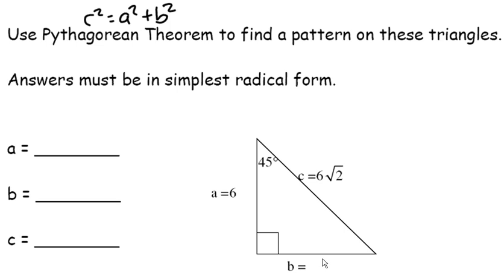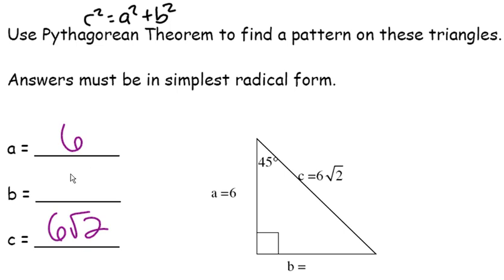Please make sure that all your answers today are in simplest radical form. We already know that side A is 6, and we know that C is 6 radical 2. So please go ahead and use the Pythagorean Theorem to find out what B is. Go ahead and do that, and come back when you have your answer. You should have gotten that B is also 6.